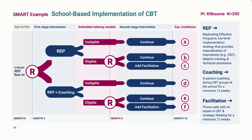Here's the study design. There was a three-month run-in period before the first randomization, during which everybody got REP. Then they were randomized to either continue with REP or add coaching. At month five, they were classified as either eligible for facilitation or not. Those not eligible continued with whatever they began with; those who were eligible were randomized to either continue or receive facilitation in addition to what they were getting.